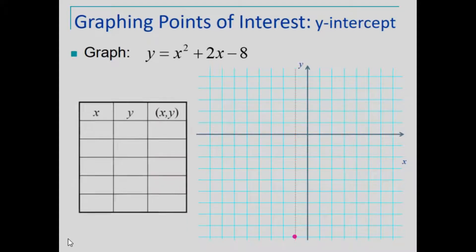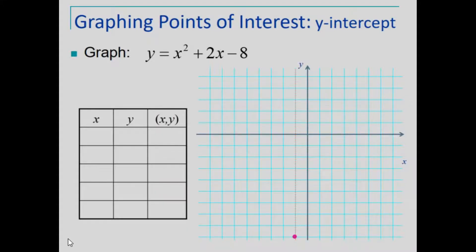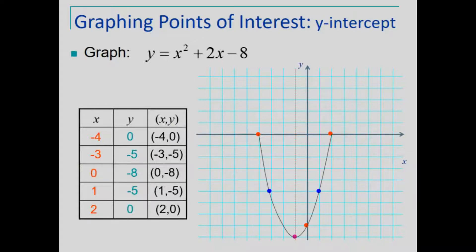Once the vertex is found, plot some other points on either side of the vertex. Letting x equal negative 4, we find y is equal to 0. We'll plot that point along with several other points, and using a smooth curve, we'll connect those points.